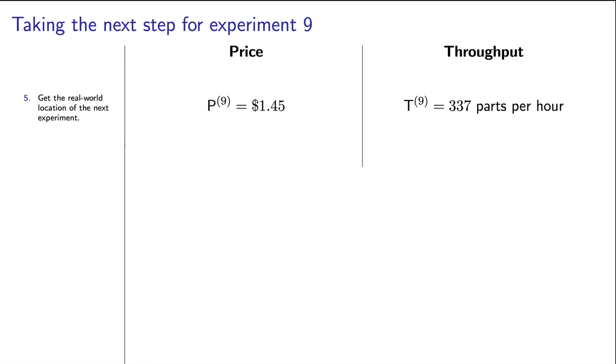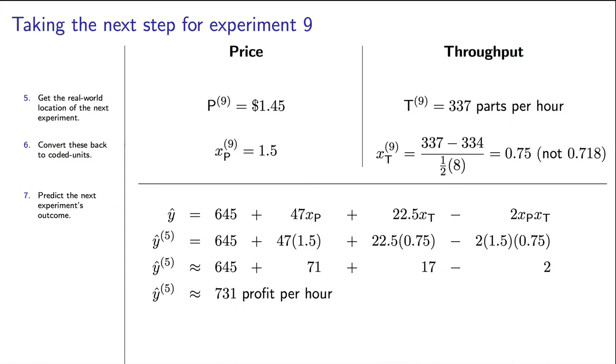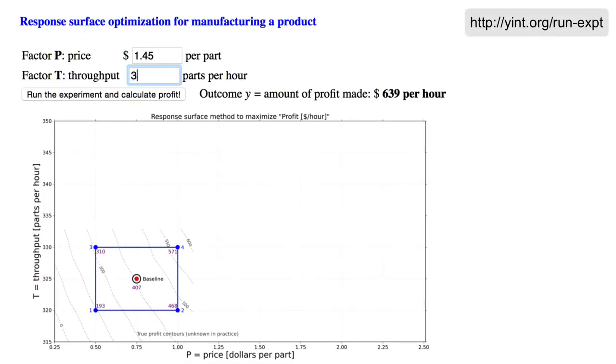Now we should always go predict the outcome of the experiment before running it. In coded units, xp for the ninth experiment is at 1.5 because we selected that. You might presume that the xt value is 0.718 that you calculated, but not quite, because remember we rounded that value. So we should go recalculate what xt is for run 9 using the usual formula that connects real-world units to coded units. So that value of xt equals 0.75. When we use the model, the prediction with these coded values gives us a profit prediction of $731. Now if you go to the website and run the actual experiment, you might get a value close to 717. Our prediction was off by about $13 or $14.